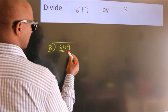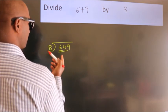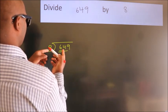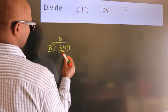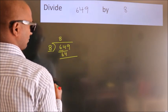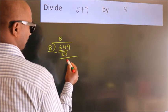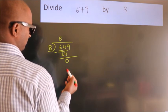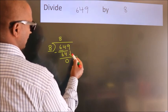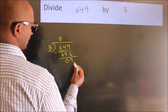should take two numbers: 64. When do we get 64 in the 8 table? 8 times 8 equals 64. Now we subtract and get zero. After this, bring down the beside number, so 9 comes down.